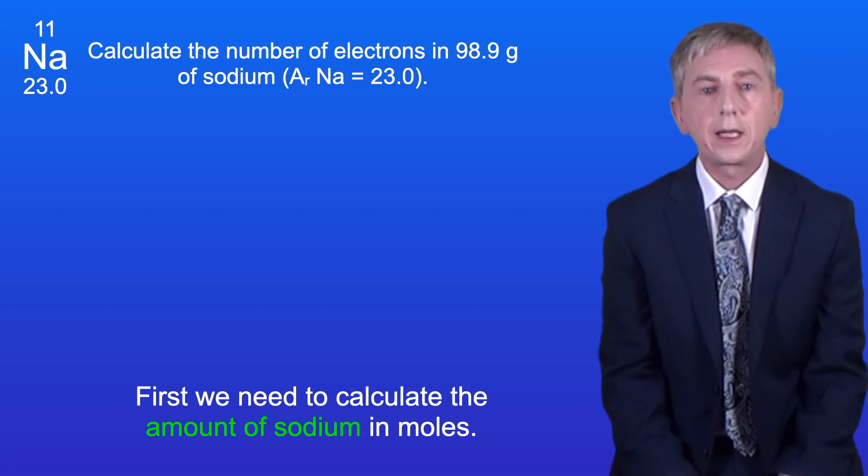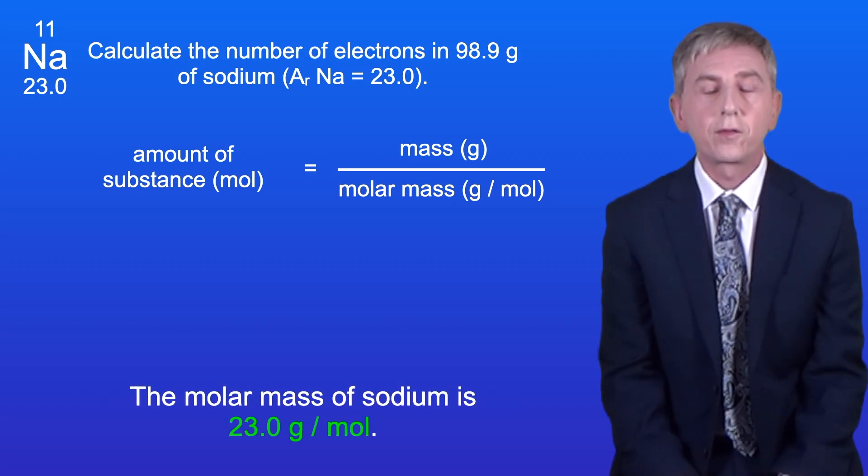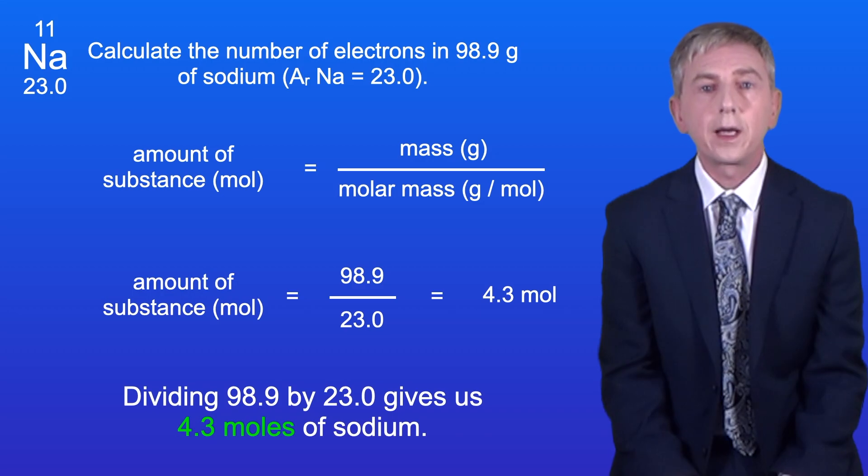Okay, first we need to calculate the amount of sodium in moles. To do this we divide the mass by the molar mass. The molar mass of sodium is 23.0 grams per mole. Dividing 98.9 by 23.0 gives us 4.3 moles of sodium.